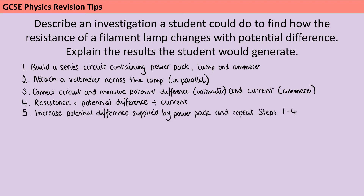The fifth part of my method is to increase the potential difference — changing my independent variable — and then repeat the previous steps. Having a numbered list really helps here because I can just say 'repeat steps one to four' rather than restating everything up to this point, and then measure again.